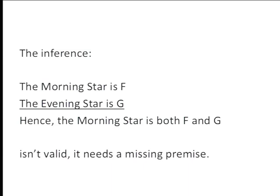Consider this inference: 'The morning star is F; the evening star is G; hence the morning star is both F and G.' Is that valid? No — that is not a valid inference. You need an extra premise: 'The morning star is the evening star,' and then it would work.